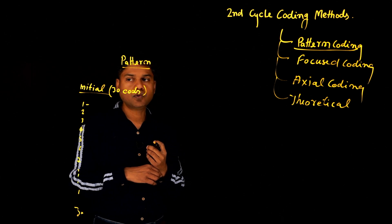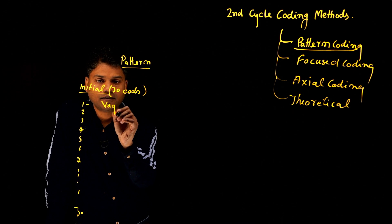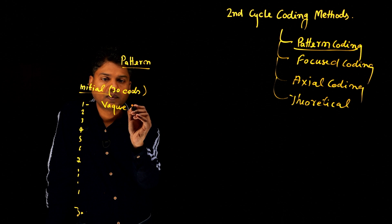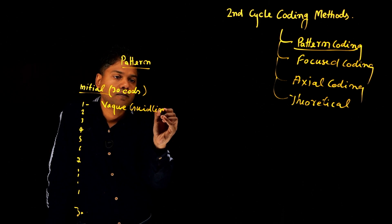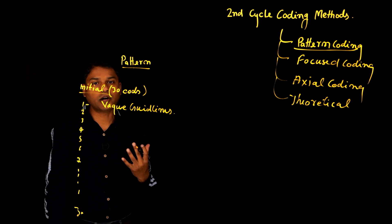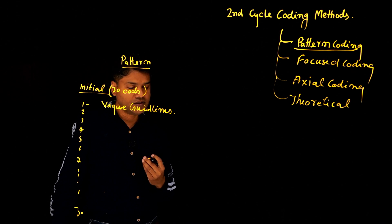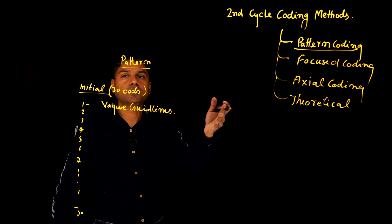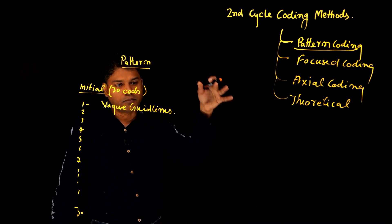So let's say the first code which emerged is vague guidelines. So that's my first code when I got it from my interview data, vague guidelines, which means vague guidelines related to the communication from the top to the department.